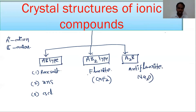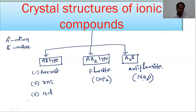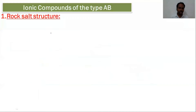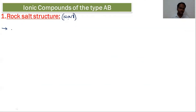In all these ionic compounds, generally the anion is of big size, so it will form the lattice. Let us see them one by one. First, we will see the AB type. In ionic compounds of type AB, the first structure is the rock salt structure. Rock salt means the stable salt NaCl, sodium chloride, and the anion mainly constitutes the lattice.